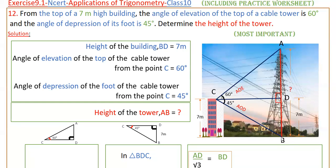If you look in the downward direction that is angle of depression, and if you look upward that is angle of elevation. So here angle of elevation is 60 degrees and angle of depression is 45 degrees. From C to B is the foot of the tower, and we have to determine the height of the tower, that is AB.